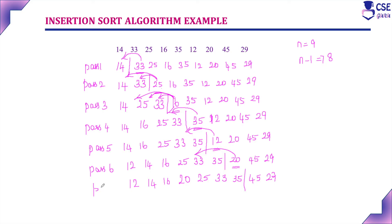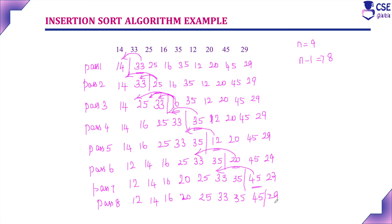In pass 7, consider element 45 — it is compared with all elements in the sorted list. At the end of pass 7, 45 is the greatest element compared to all elements in the sorted list, so it occupies the last position. Now only one element remains in the unsorted list. In pass 8, 29 is compared with all elements in the sorted list. 12, 14, 16, 20, and 25 are all smaller than 29, so when comparing with 33, 29 is smaller and occupies that position. Then 33, 35, and 45 follow.